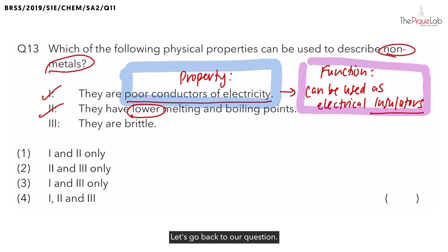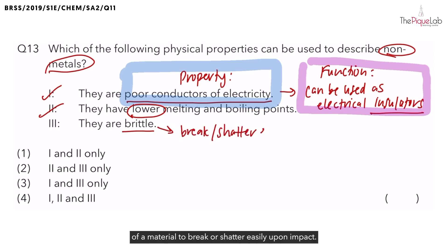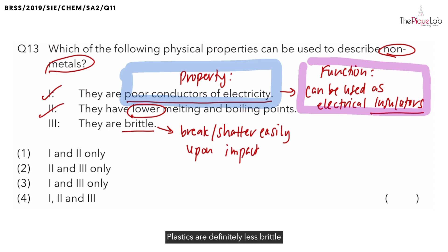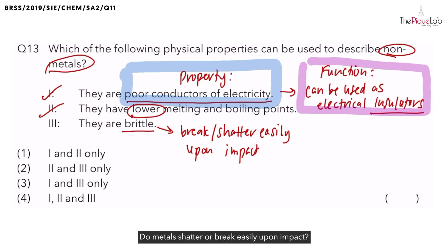Let's go back to our question. Finally, what about property three? Non-metals are brittle. What does brittle mean? Brittleness refers to the tendency of a material to break or shatter easily upon impact. Examples of brittle materials include glass and ceramics — both are non-metals. What about plastics? Plastics are less brittle compared to glass and ceramics, but we are comparing these materials to metals. Metals do not shatter or break easily upon impact, so non-metals are considered brittle.